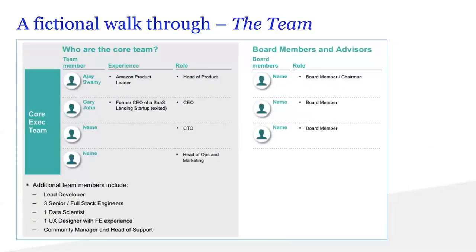Lastly, talk about the team — this is very, very critical. Investors care about the core executive team, and possibly advisors or board members. The executive team are the ones that will make a difference. Why are the key people — Ajay and maybe Gary — the right ones to run this successfully? How can they de-risk this venture, ensure money is not wasted, and grow quickly within the VC investment horizon of five to seven years? VCs invest in teams. The idea might or might not work out, but VCs truly invest in teams — so over-index on this.